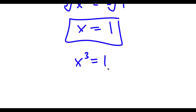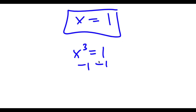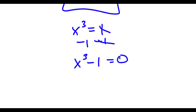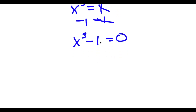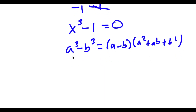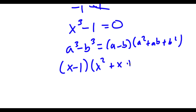Now I'm going to get more solutions. This time I'm going to subtract 1 on both sides, so I get x to the power of 3 minus 1 is equal to 0. And if I have something in the form a to the power of 3 minus b to the power of 3, this is equal to a minus b times a squared plus ab plus b squared. So in this case, this is going to equal x minus 1 times x squared plus x plus 1, which is equal to 0.